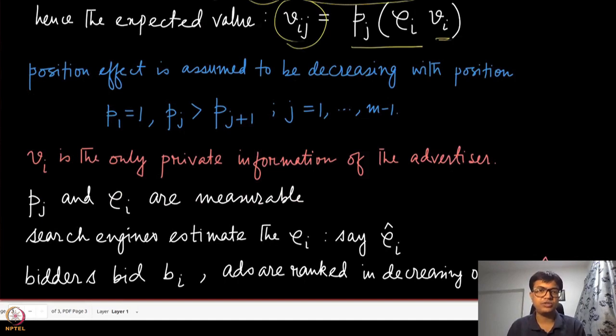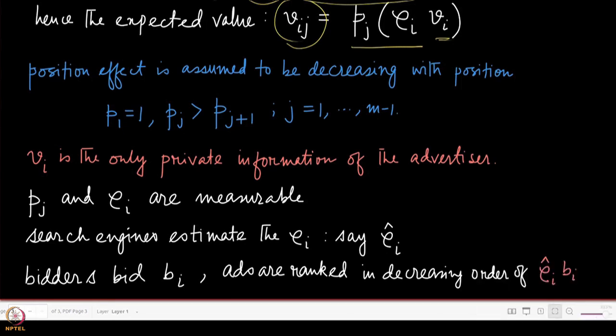VI is the only private information of the advertiser. Both PJ and ρI are actually measurable quantities. We can estimate the ρI's, say as ρ̂I. This is something that search engines always do. They try to find out for every advertiser what are their ρ components and their position components. The position component is common for all agents, but the ρI component is specific to a specific advertiser.